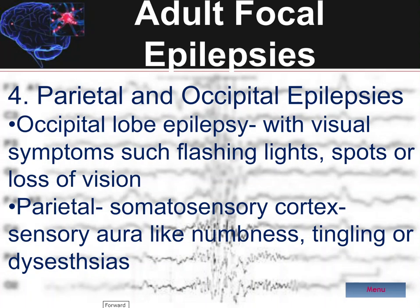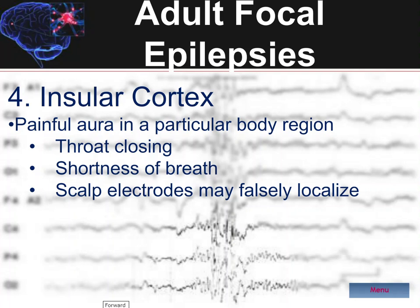There may also be loss of vision. In parietal lobe epilepsy, the somatosensory cortex is predominantly involved, and therefore numbness, tingling, and dysesthesias may occur as their manifestation. Insular cortex focal epilepsies may have seizures described as painful, with aura perhaps felt as a throat closing or difficulty breathing. These are very difficult to localize, and surface electrodes may show false localization over other lobes of the brain, potentially resulting in misdiagnosis or mistreatment.